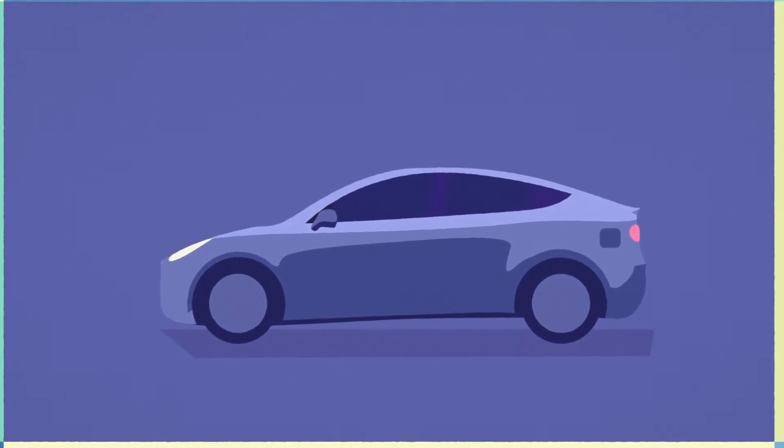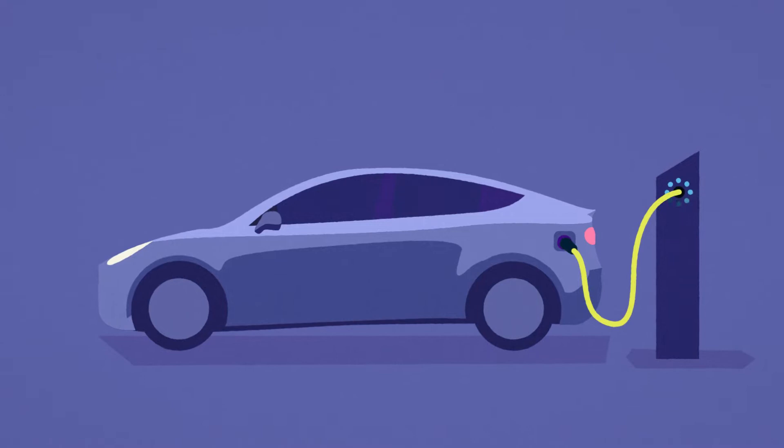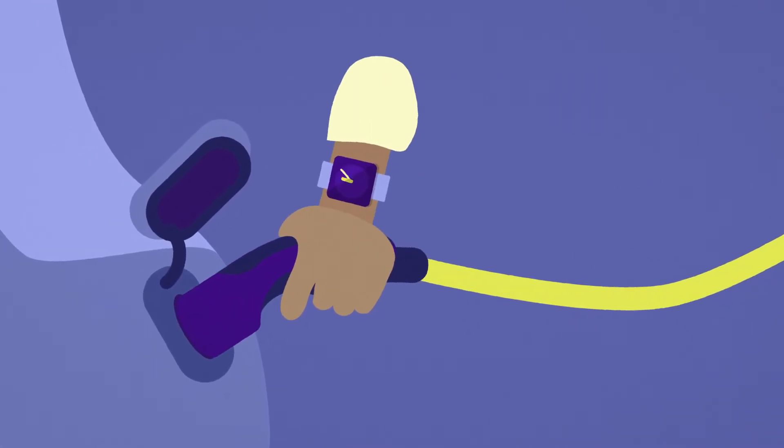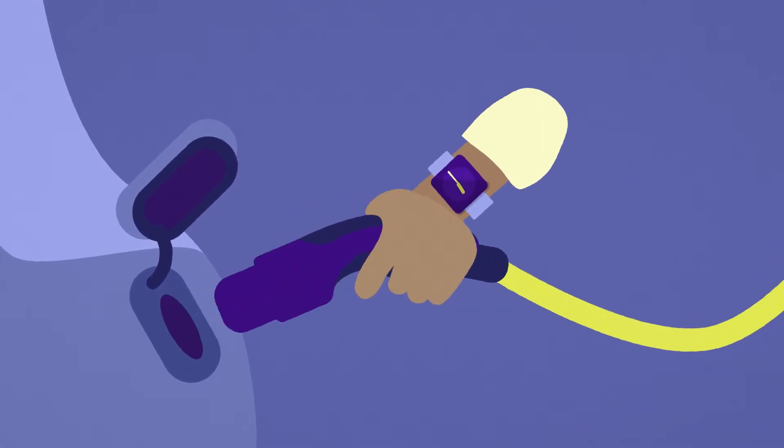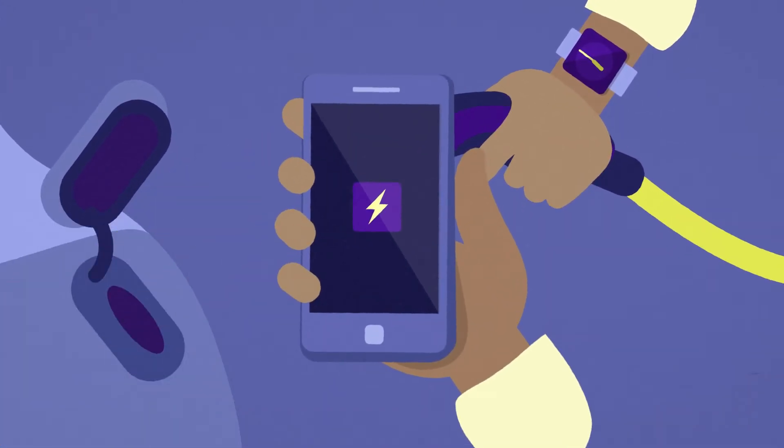At first glance, some modern things already seem pretty smart. Take, for example, the charging of your electric car. You just plug it in, and when you're done, you pull out the plug. But even that could be a lot smarter.